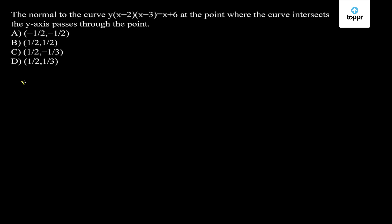At that point x will be equal to 0, since it's on the y-axis. The curve is y = (x + 6) / ((x - 2)(x - 3)).